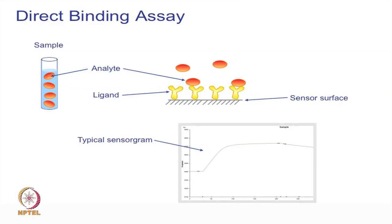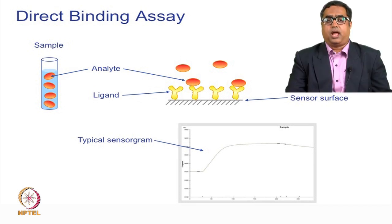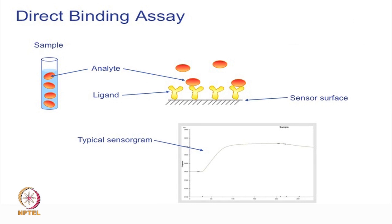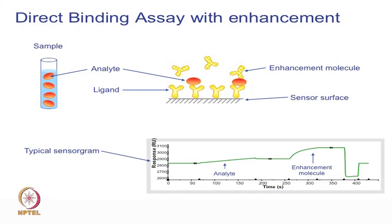One of the very simple types of assay would be a direct binding assay. In a direct binding assay, you have the ligand immobilized on the sensor chip and an analyte passed over the surface and the interaction is recorded. You can see on the screen the interaction showing a simple binding and regeneration. Sometimes binding does not show clearly because the responses from the analyte are very little. In that case, we can pass an enhancement molecule that binds to the analyte and shoots up the responses so that it can be captured by the system in a prominent way.